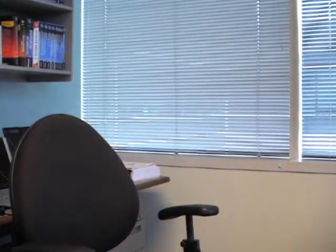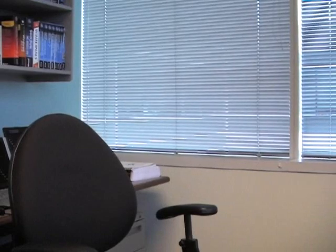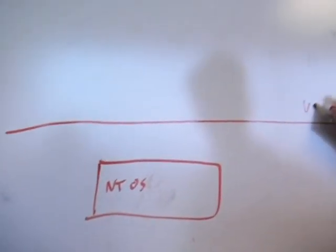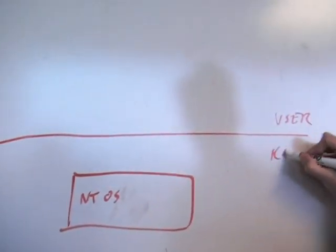Let's draw out the kernel and its components — your definition of kernel. It's always fun to get technical fellows and architects up on the whiteboard. So, you've got NTOS kernel here, abbreviated as NTOS, running in kernel mode. We've got the user mode / kernel mode boundary here.